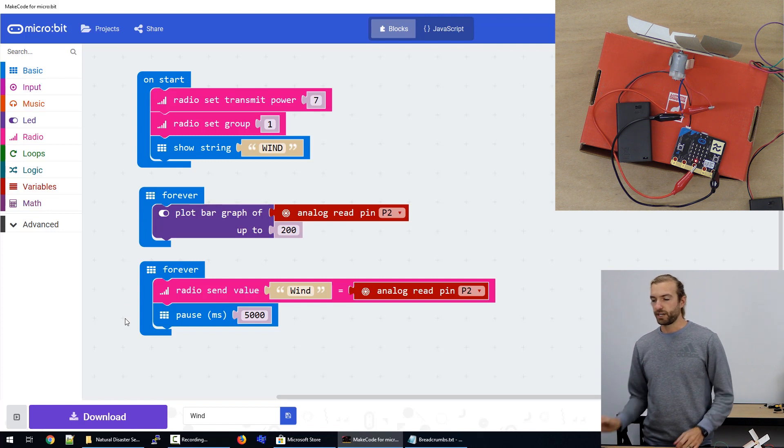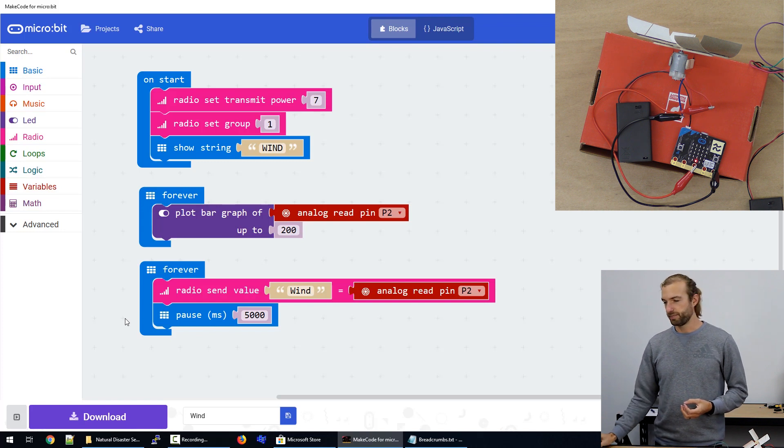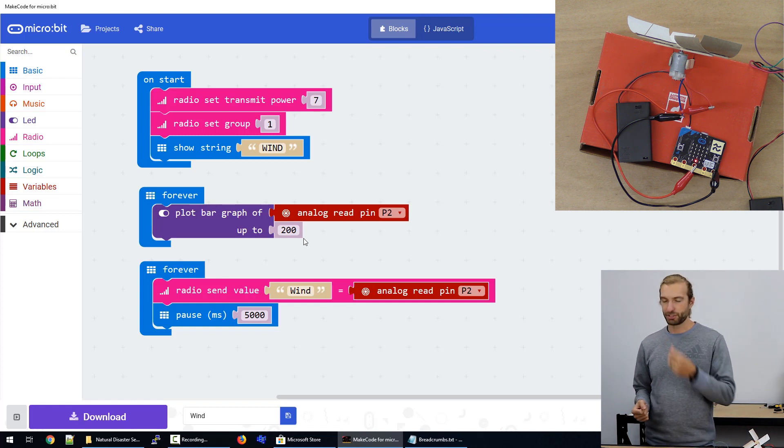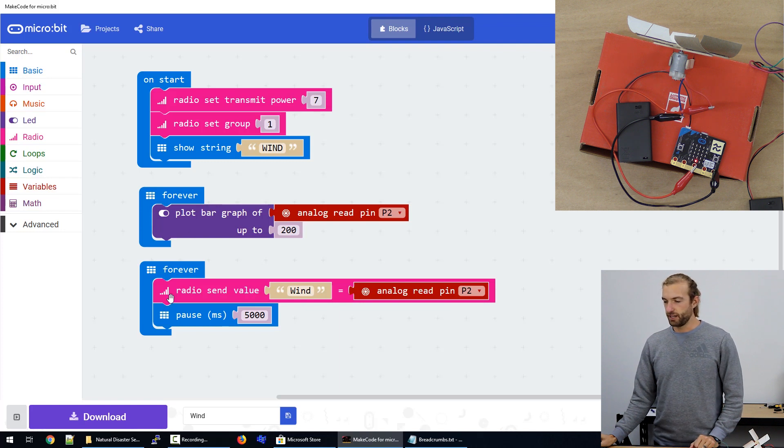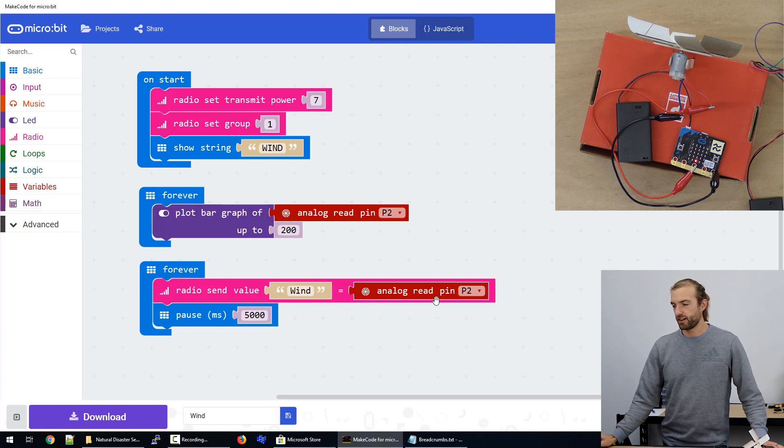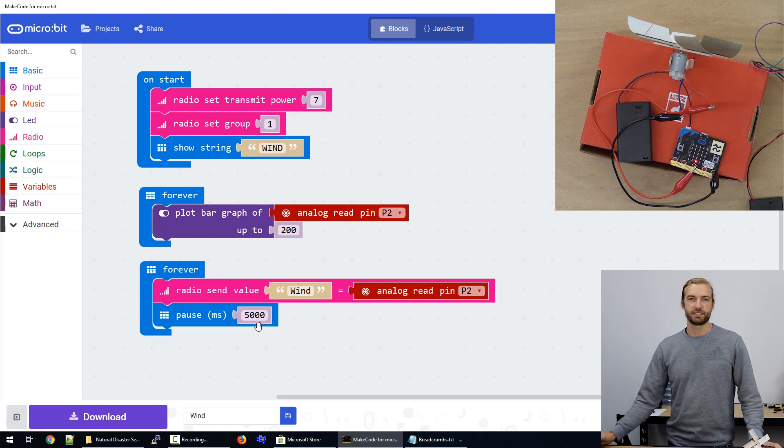Now we have two forever loops here because they are running in parallel or close to it. The analog read we take off of pin P2 and we plot that on the LEDs of up to 200, which is an arbitrary number that I picked—I didn't expect it to ever reach 200, so that seemed like a good maximum for our graph. And we also send the value out with the text string 'wind' and the analog value read off of P2, and we pause for five seconds afterwards.